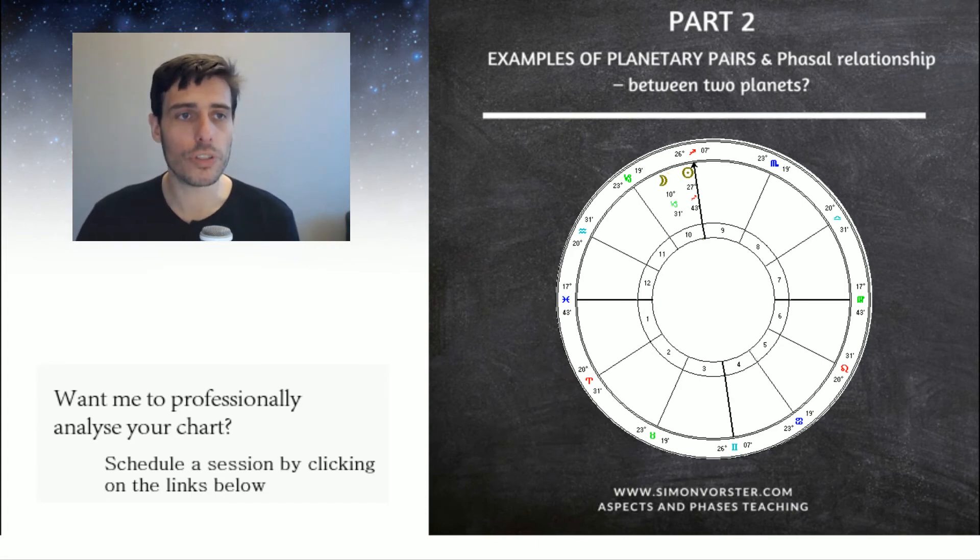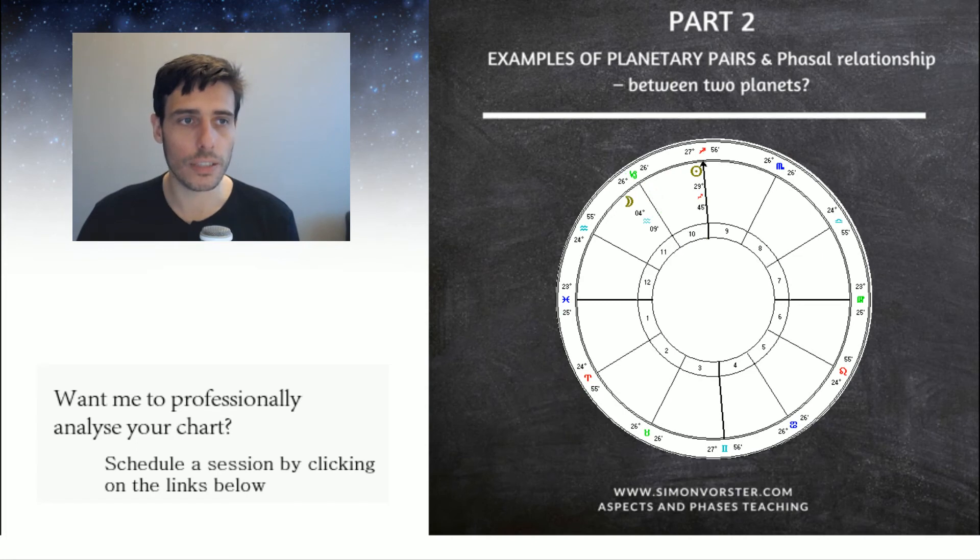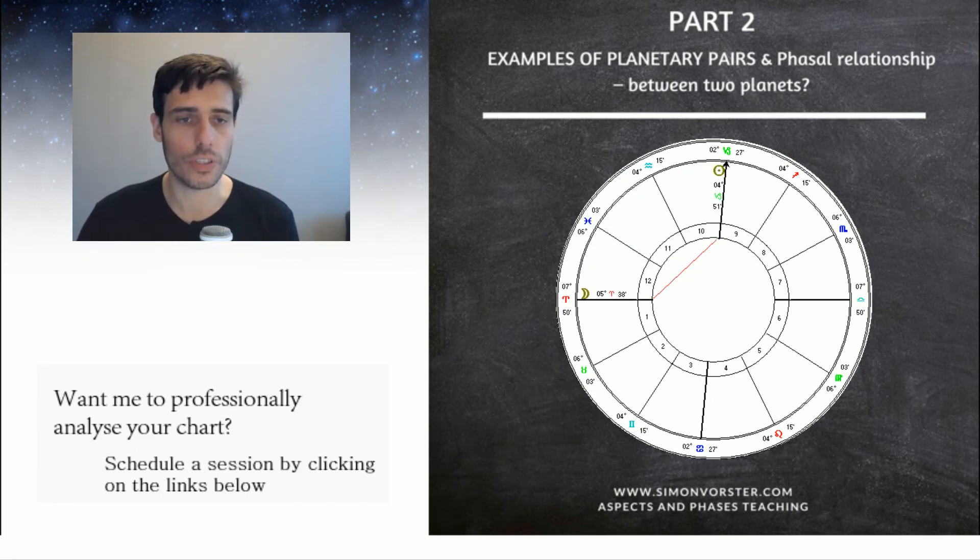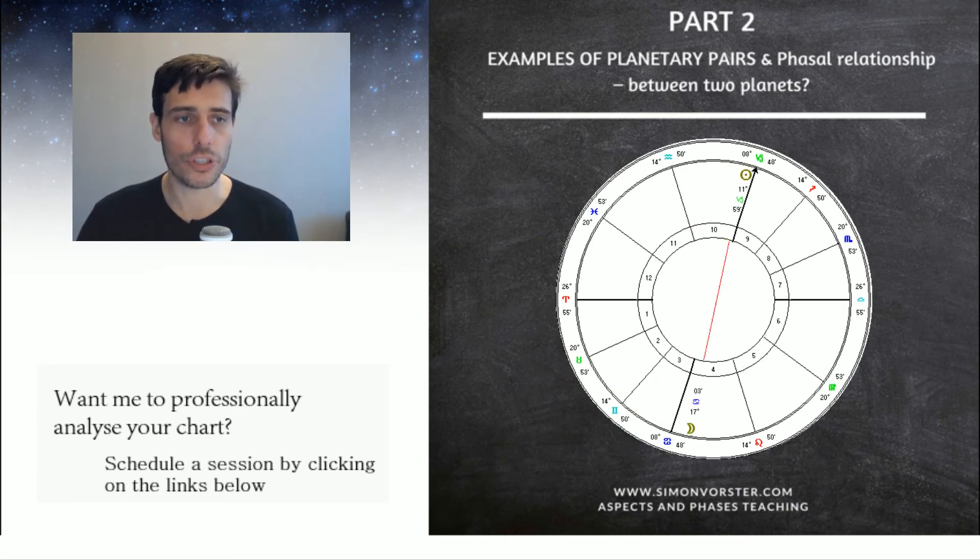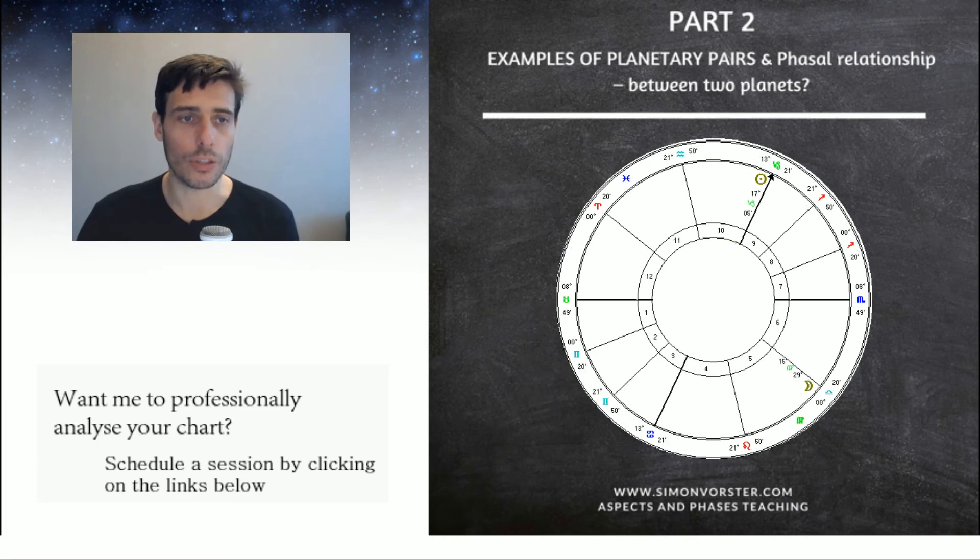And so the moon is now creating a new evolutionary cycle and it goes across and it goes across and it goes across. Can you see there's the first quarter square? There's the trine. There's the inconjunct and the opposition. And eventually we go around the chart again.